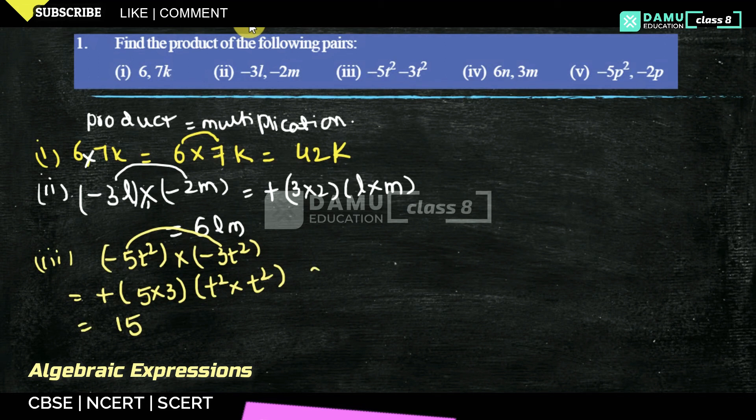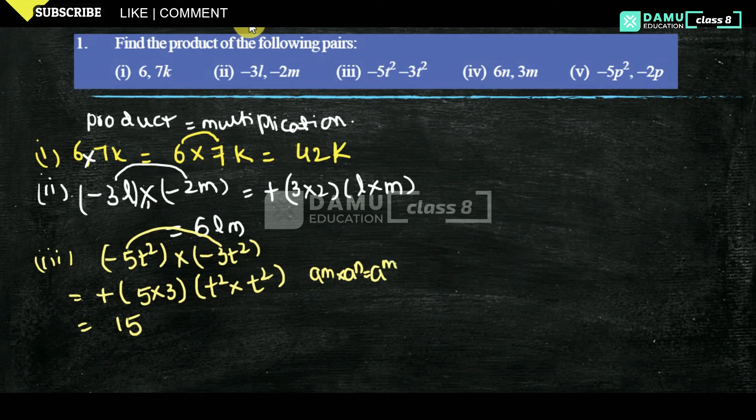t² into t², that is a power m into a power n, that is a power m plus n. So what you can do here is t power 2 plus 2, that is 15 t power 4. That is the answer.